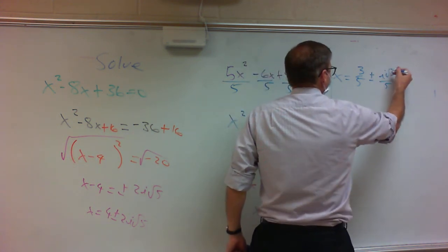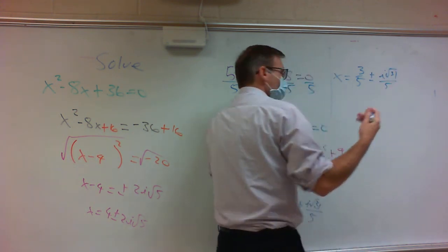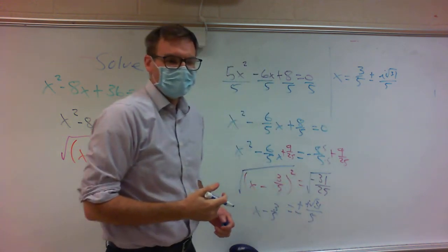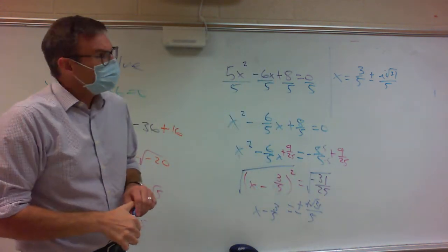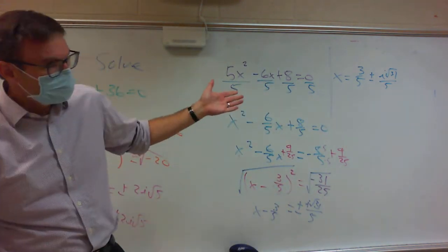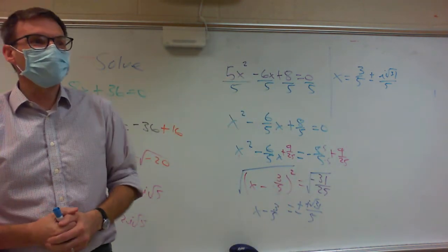Add 3 fifths to both sides. So x equals 3 over 5 plus or minus i times the square root of 31, over 5. That's as ugly as it ever gets.